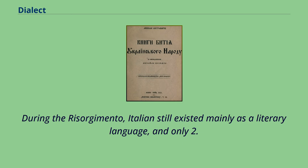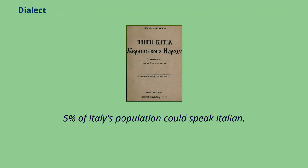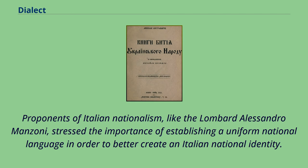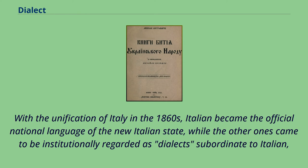During the Risorgimento, Italian still existed mainly as a literary language, and only 2.5% of Italy's population could speak Italian. Proponents of Italian nationalism, like the Lombard Alessandro Manzoni, stressed the importance of establishing a uniform national language to better create an Italian national identity. With the unification of Italy in the 1860s, Italian became the official national language of the new Italian state, while the other languages came to be institutionally regarded as dialects subordinate to Italian.